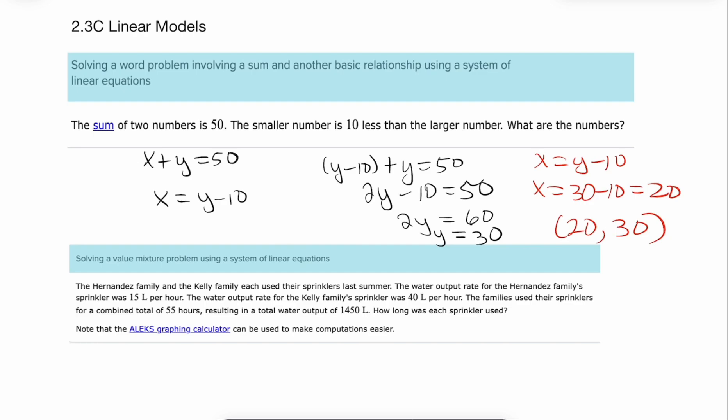Now it's always a good idea to just check the information in the problem. Is the sum of the two numbers 50? Yes. 20 plus 30 is 50. Is the smaller one 10 less than the larger one? Yes. 20 is 10 less than 30. So I always kind of go back and plug it back in. So there's one type of those problems.